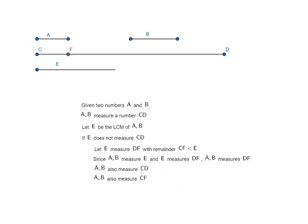Why? Because CF is less than E. So it is not possible for A and B to measure CF because E is the least common multiple.